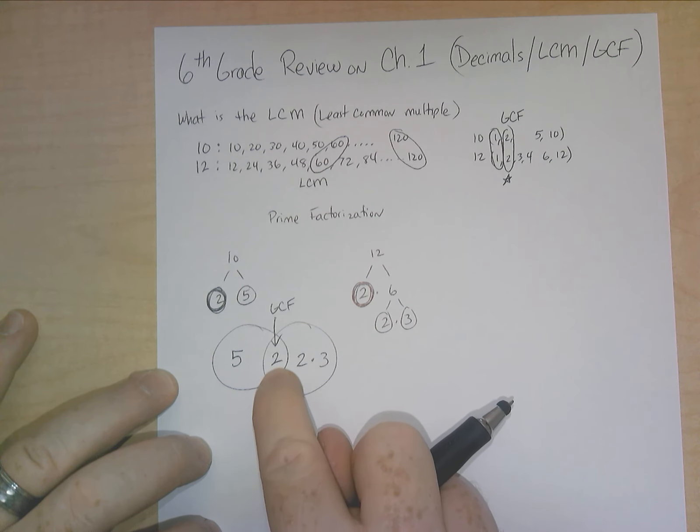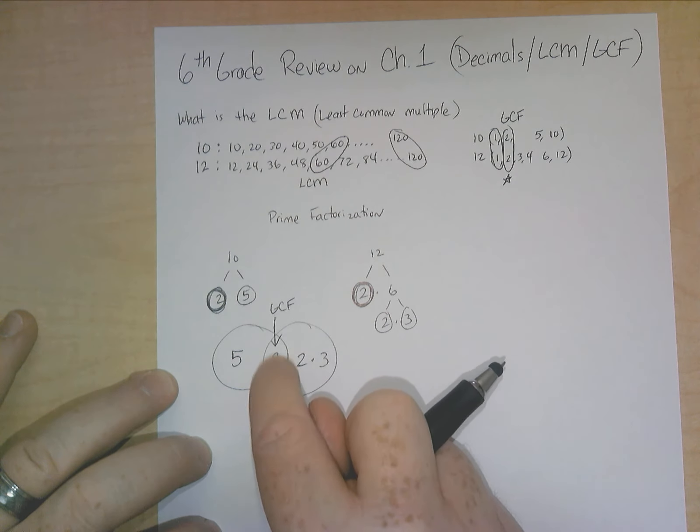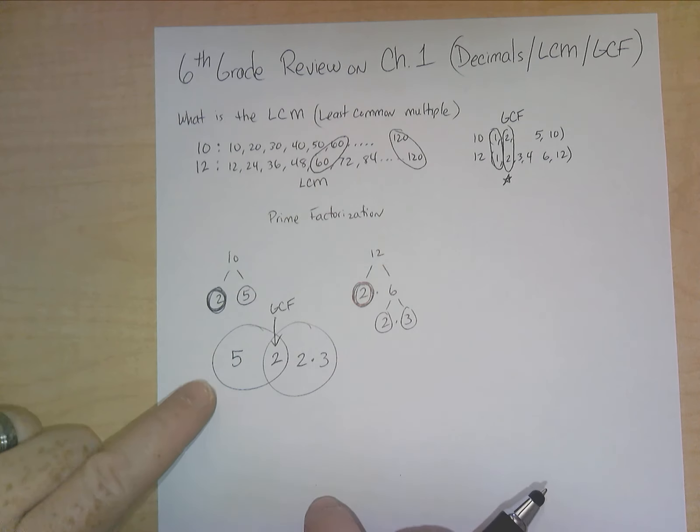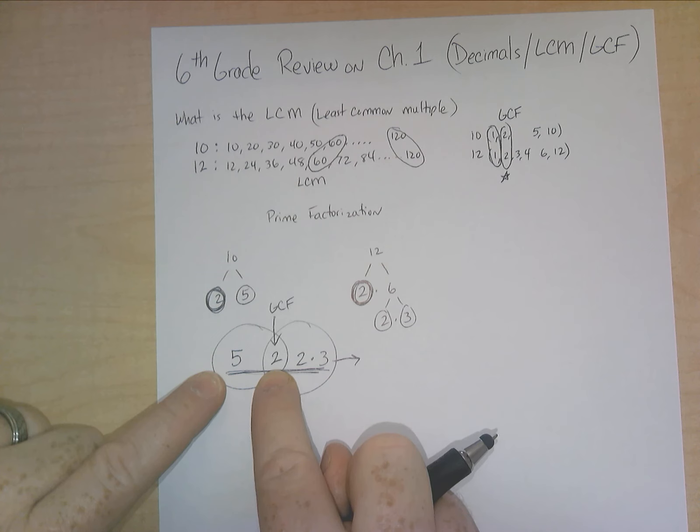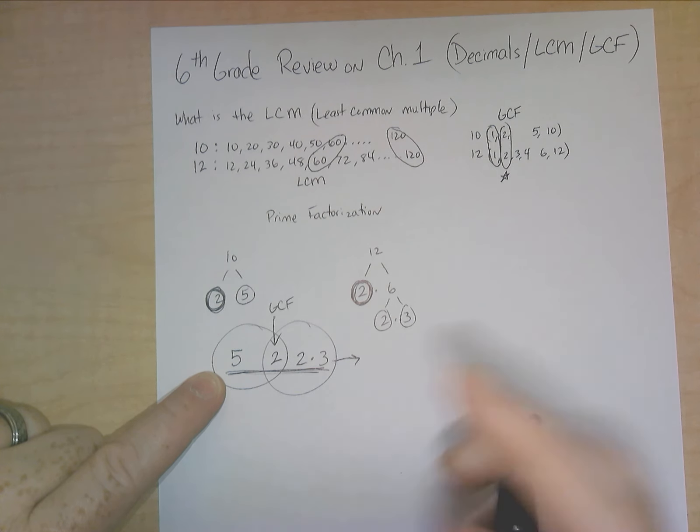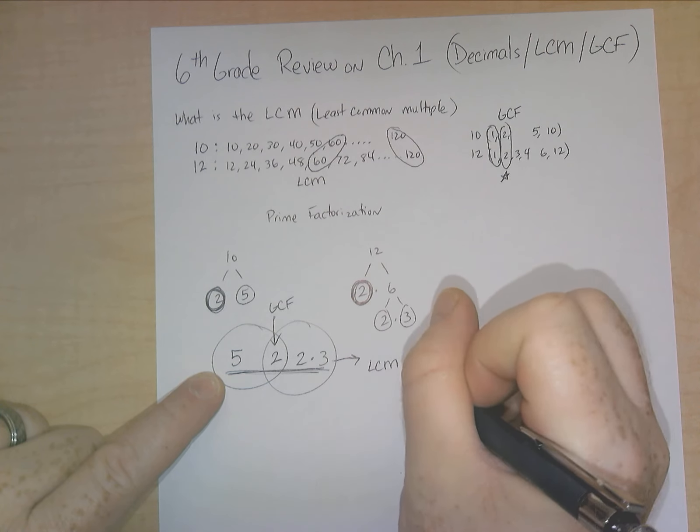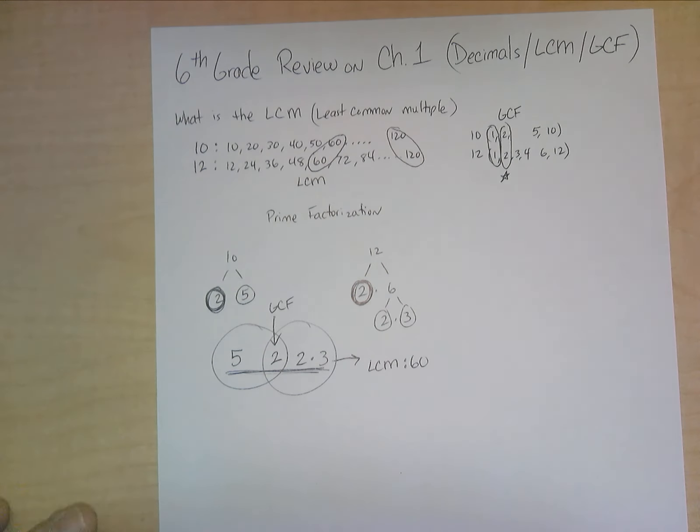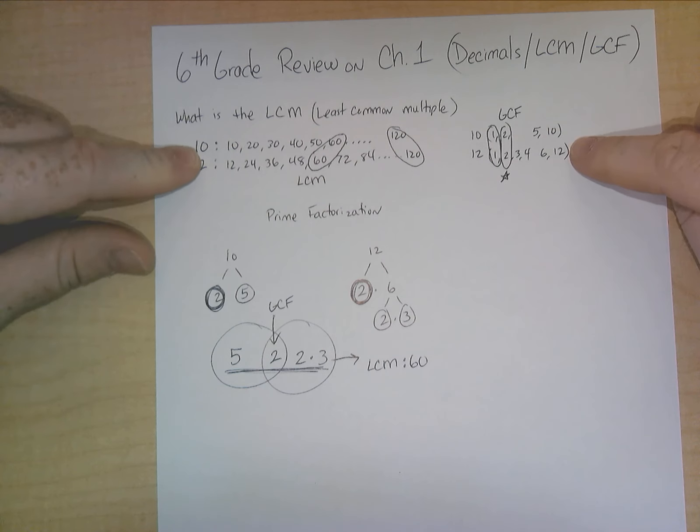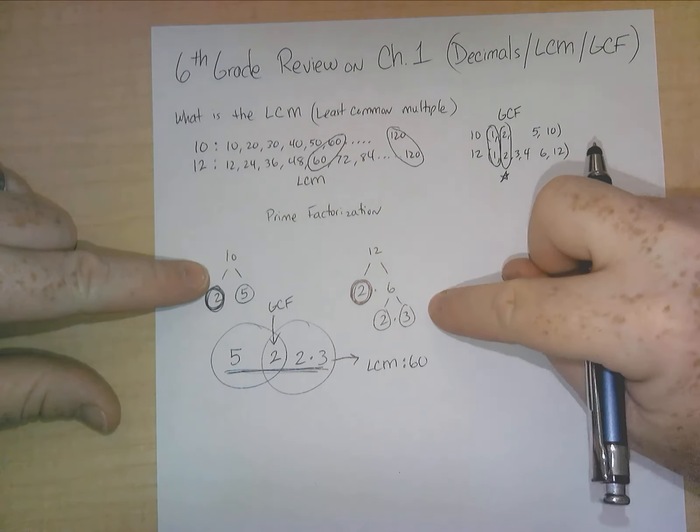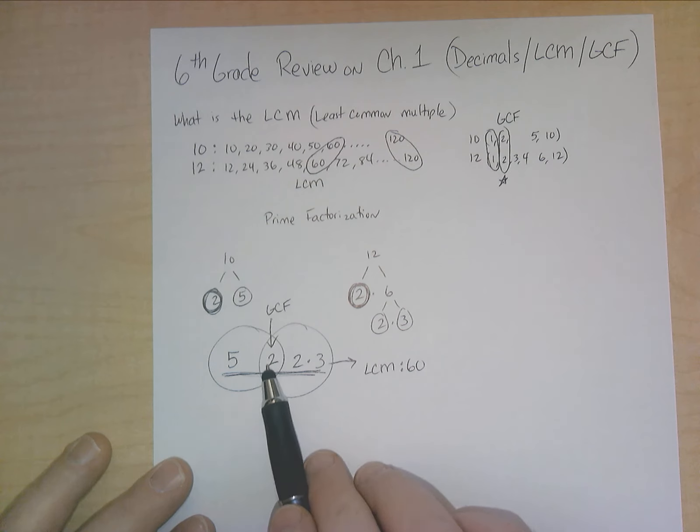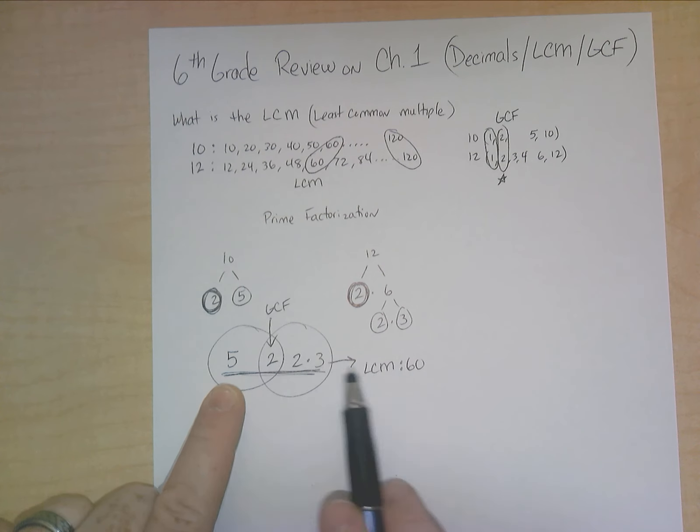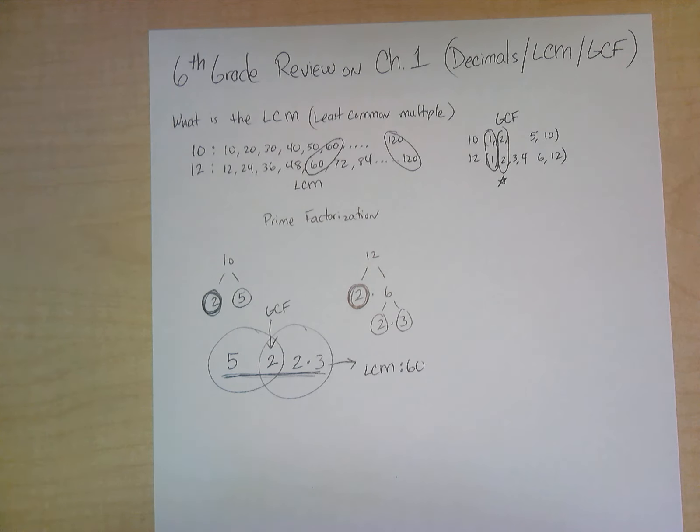So this right here is called the greatest common factor. Now, if you have another number in here, which sometimes you do, or multiple numbers, you would multiply all the numbers in that shared area. That would give you your greatest common factor. For the least common multiple, what you do is you just multiply all the numbers that are listed right here. And if you do that, 5 times 2 is 10, 10 times 2 is 20, 20 times 3 is 60. So the least common multiple is 60.